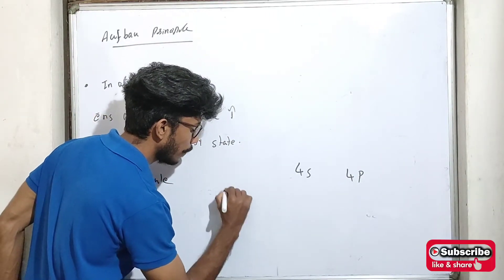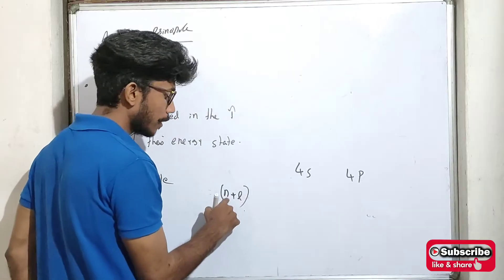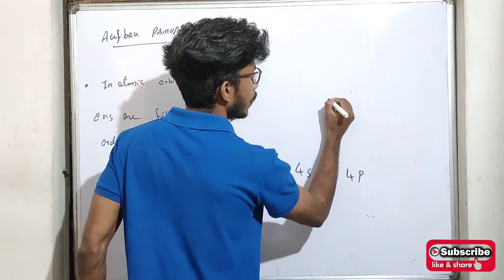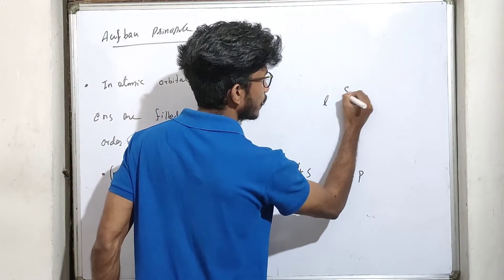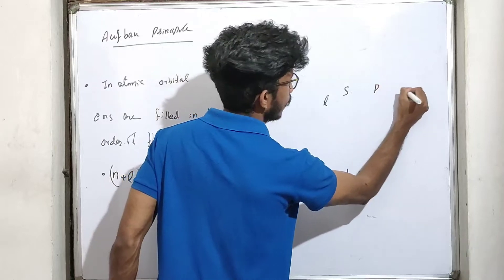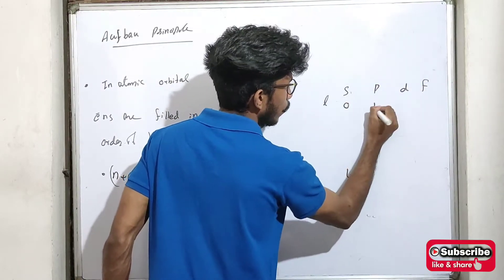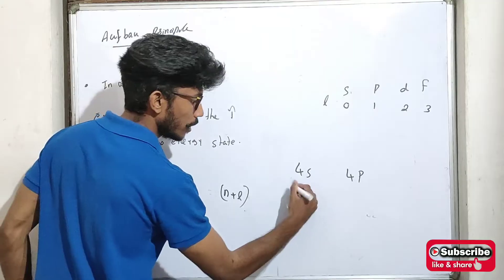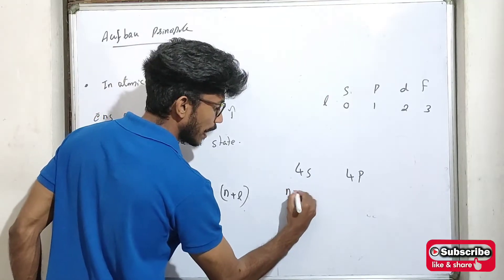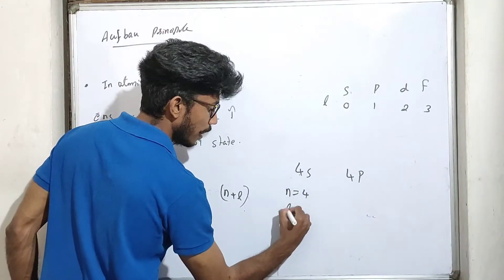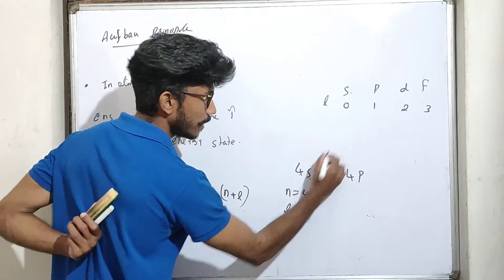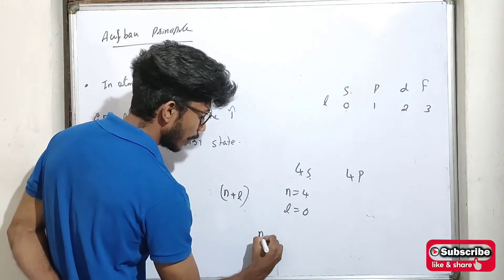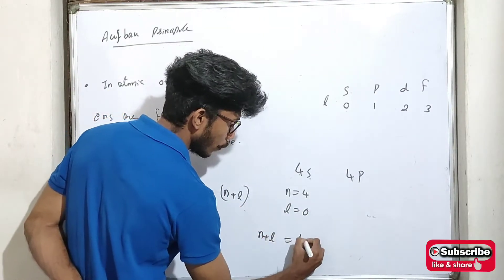What is the N+L rule? N is the principal quantum number. The L value corresponds to the subshell: S=0, P=1, D=2, F=3. For 4s: N value is 4, L value is 0, so N+L = 4.